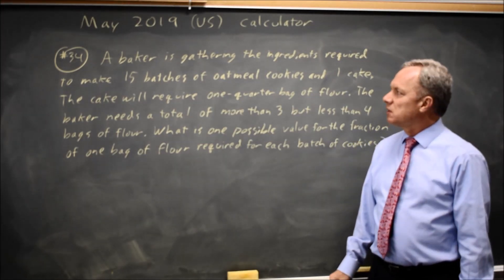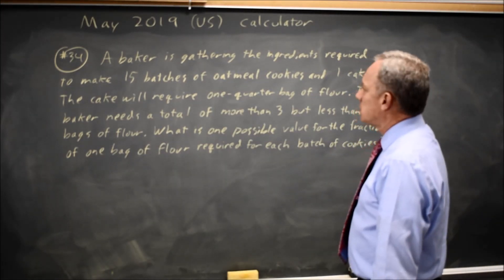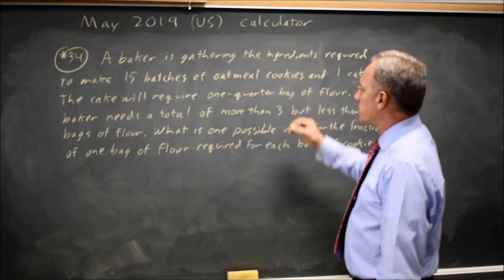This is calculator question number 34. The problem describes a baker who's going to make 15 batches of oatmeal cookies and one cake.